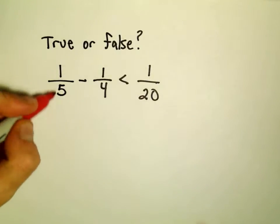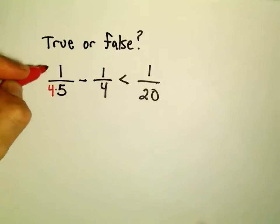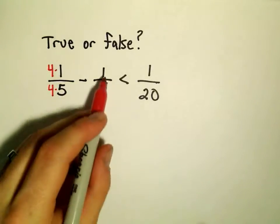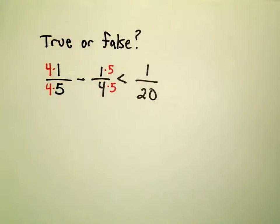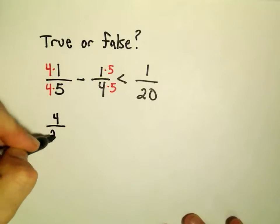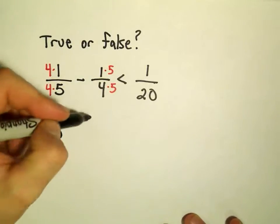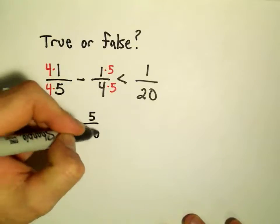To get a 20 in the denominator of our first fraction, we'd have to multiply top and bottom by 4. For the 1/4 we would have to multiply top and bottom by 5. And when we simplify that, we'll get 4 over 20 for our first fraction, minus 5 over 20 for our second fraction.